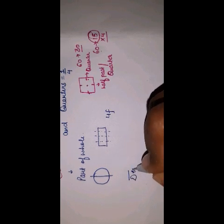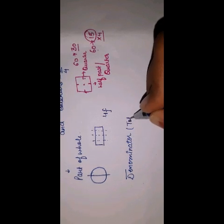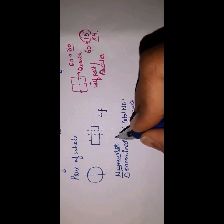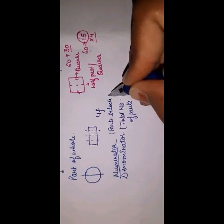Aap dekhe, bacha — jo total number of parts hote hain, woh kya hote hain? Hamare denominator. Denominator means total number of parts. So the denominator will be 2, so you will get 1 by 2 — 1 part out of 2.